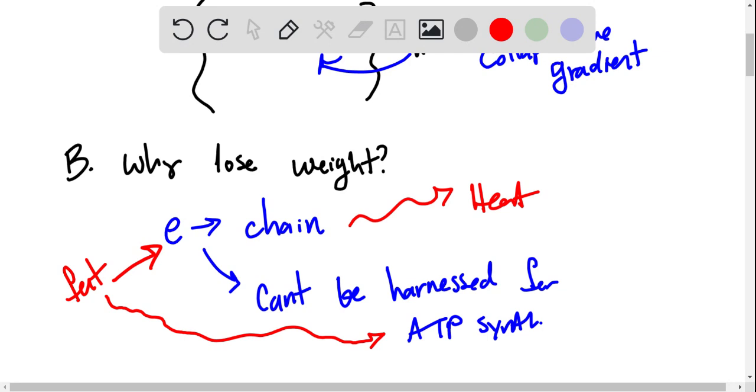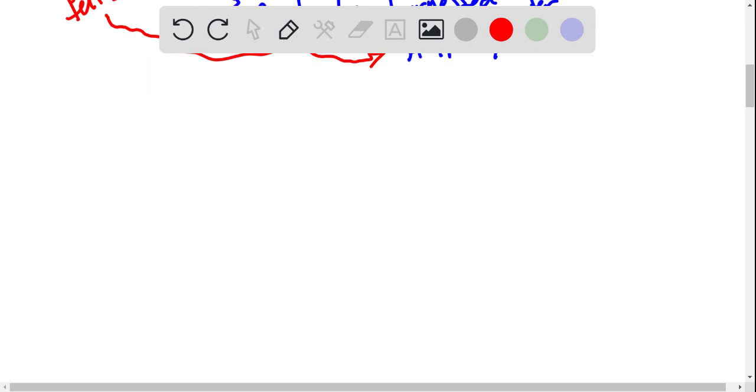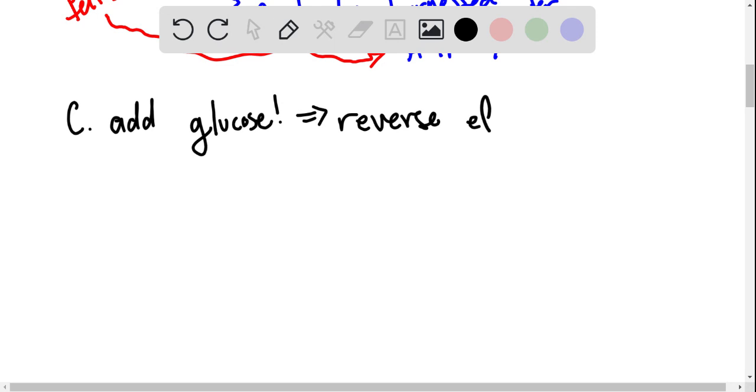Okay, so then we can move on to Part C. And Part C says that the effects of DNP can be reversed if we add glucose.